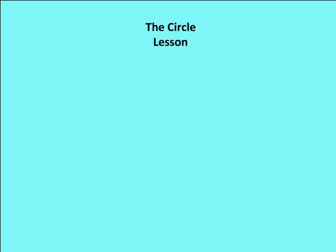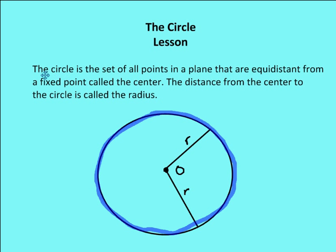Hello and welcome to OttenMath. In this edition of OttenMath, we're going to talk about circles. So let's talk about some of the basics of a circle. A circle itself is defined as a set of all points in a plane that are equidistant from a fixed point called the center.